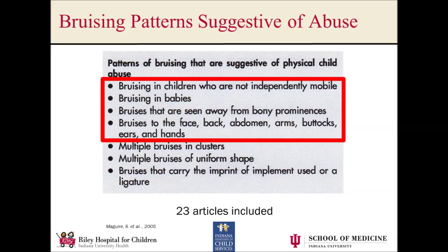This is a systematic review of 23 articles looking at bruising patterns in abuse, and it echoes many of the same things. Suspicious bruising patterns in kids include bruising in children who are not independently mobile, bruising in babies, and bruising away from bony prominences like the face, back, abdomen, arms, and ears. But even with all of this, the thing that would make decision-making easier is if we had some sort of clinical decision rule, like the Canadian C-spine rule or the PERC rule for pulmonary embolism.